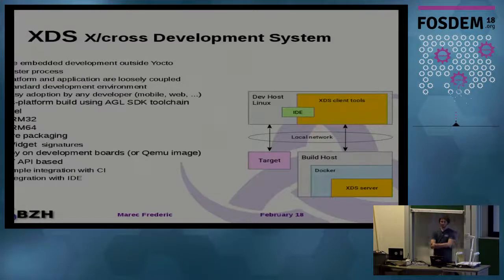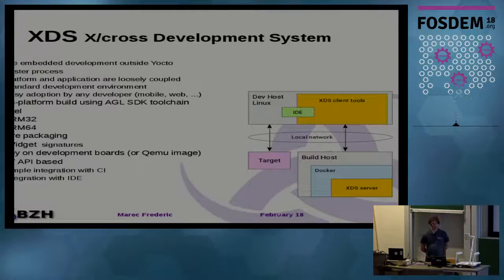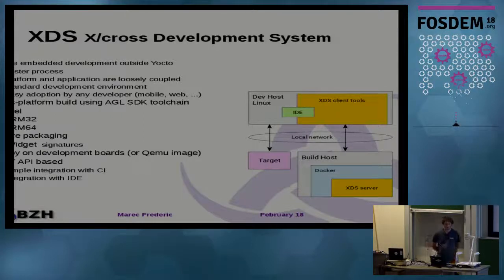In the overview of XDS cross-development system: it enables native development outside Yocto, it uses Yocto without its complexity, with a faster process. The platform and application are not linked to each other, so it allows easy adoption for any developer.